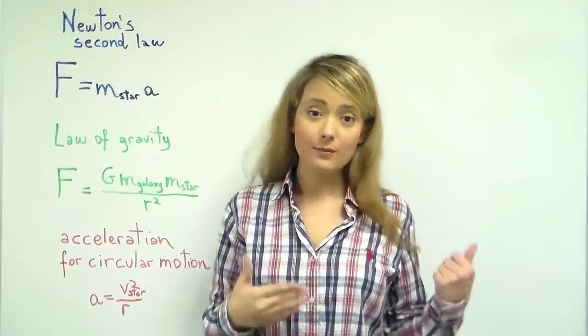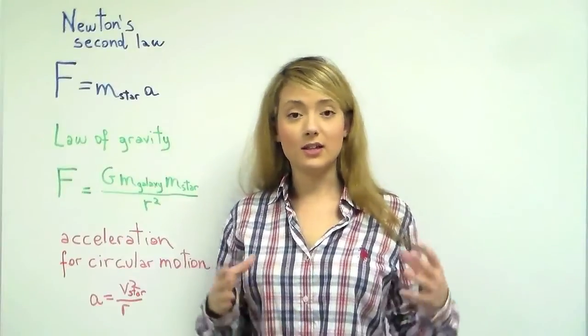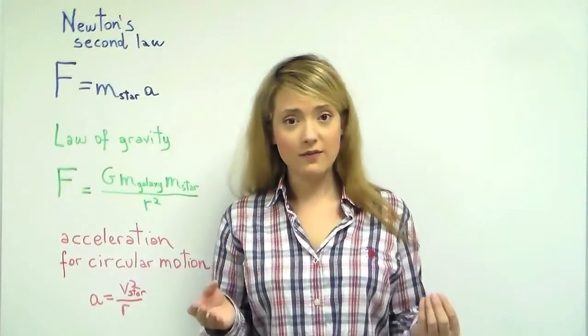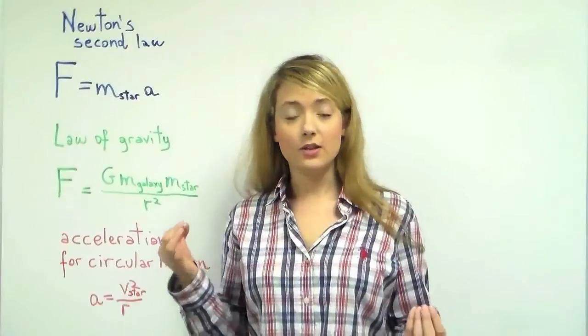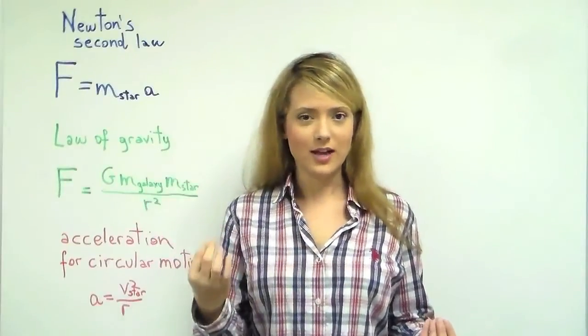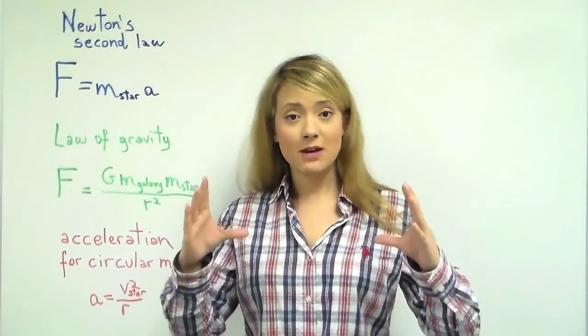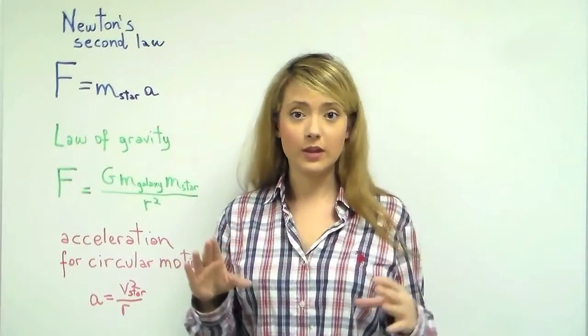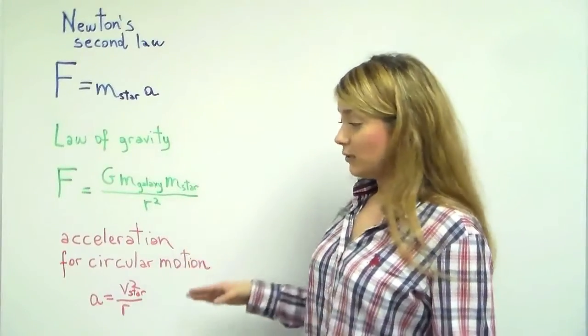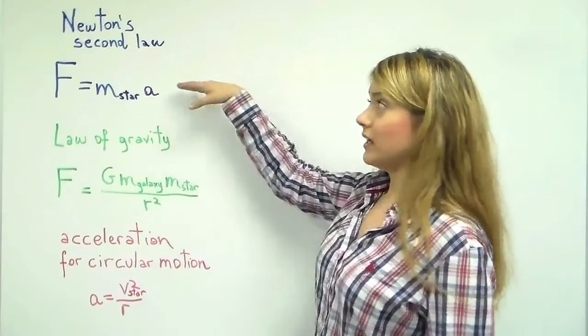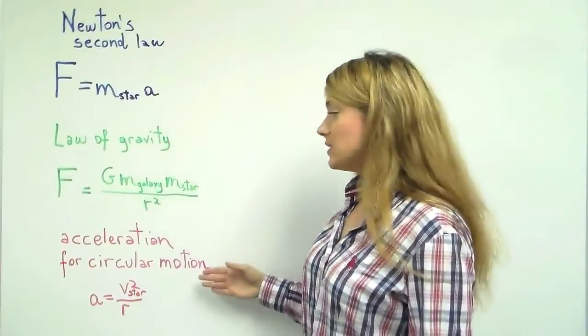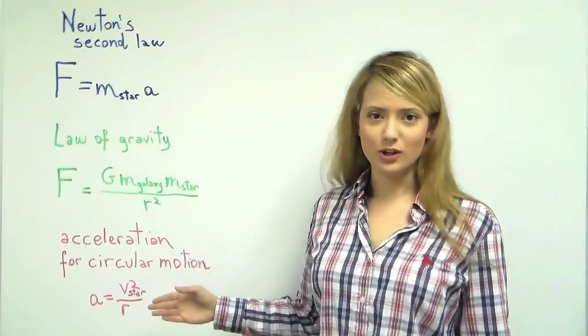Now, you remember from before that the galaxy is very symmetric, so it is safe to assume that the orbit of a star around the galaxy will be very symmetric and will be a circle itself. So, the acceleration that will end up plugging in Newton's second law is the one derived from circular motion.